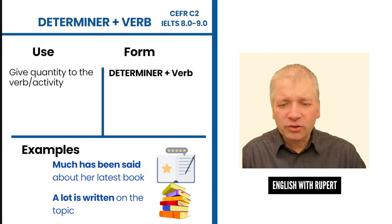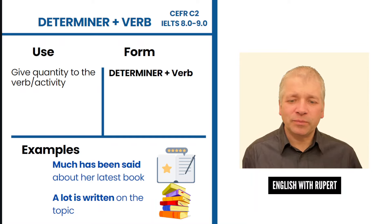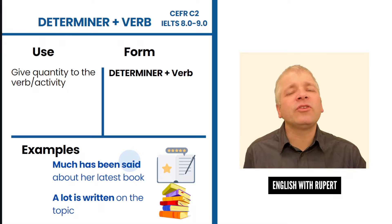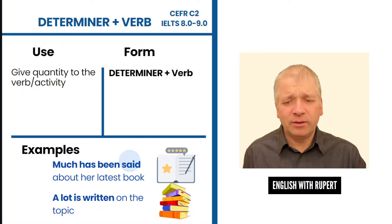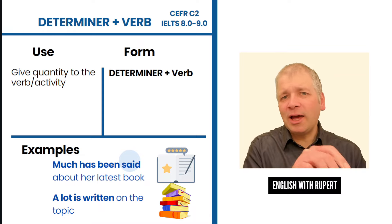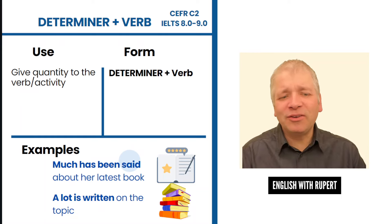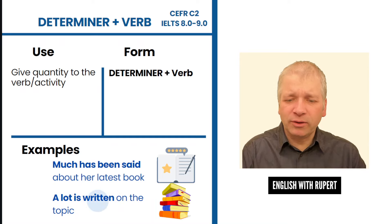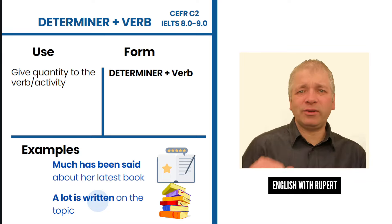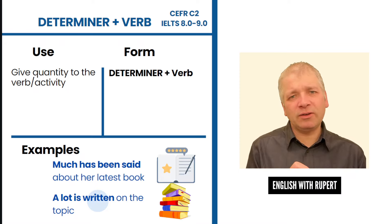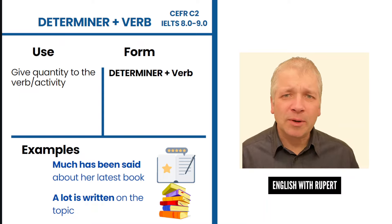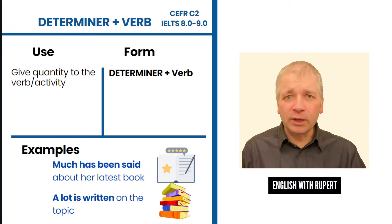We do this when we give quantity to the verb or the activity. The verb here is 'said,' and we want to give quantity to how much is said. By saying 'much is said' we mean the saying happened many times — much helps us understand the verb happened many times. The same with 'a lot is written': there are many instances of writing on this topic. By making the determiner the subject, we put a value on the verb. It's a really useful way to use determiners — placing them before the verb instead of a noun subject to give quantity to the verb.